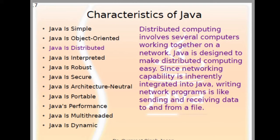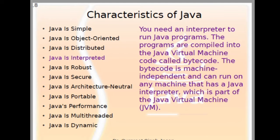Java is distributed. Distributed computing involves several computers working together on a network. Java is designed to make distributed computing easy since networking capability is inherently integrated into Java. Writing network programs in Java is like sending and receiving data to and from a file. Java is also interpreted — programs are compiled into Java Virtual Machine bytecode, which is machine independent and can run on any machine that has a Java interpreter, which is part of the JVM.